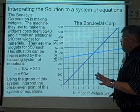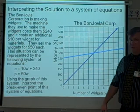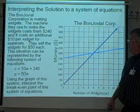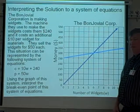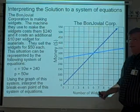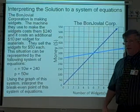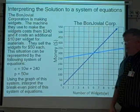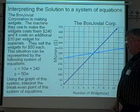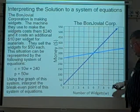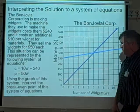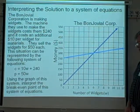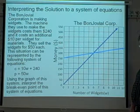Here's the point that's really important for my class. Interpreting the solution of a system of equations. The BonJovial Corporation is making widgets. The machine they use to make the widgets costs them $240, and it costs an additional $10 per widget for materials. They sell the widgets for $50 each. This situation can be represented by the following system of equations: c = 10w + 240, p = 50w. Using the graph of this system, interpret the break-even point of this system of equations.